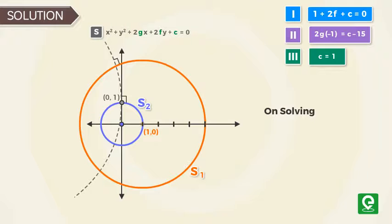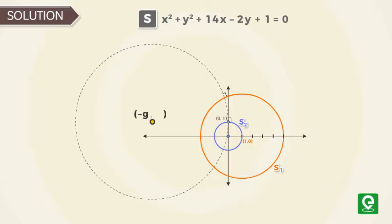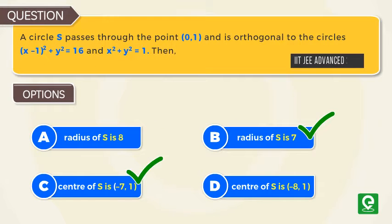Solving the three simultaneous equations we get g = 7 and f = -1. Hence the center of the circle, that is (-g, -f), is equal to (-7, 1). The radius, that is √(g² + f² - c), is equal to 7. Hence options B and C are correct.